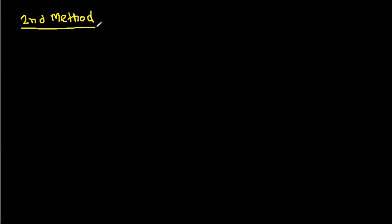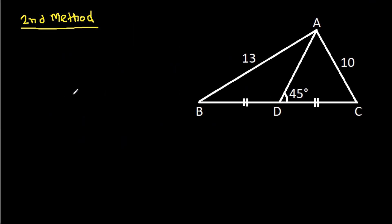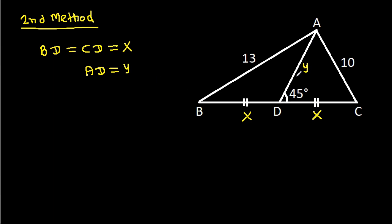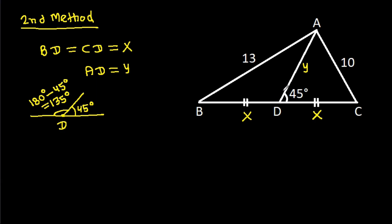And the second method: we have BD equal to CD. Suppose X, so BD is X and CD is X. And suppose AD is Y. Now at point D, this angle is 45 degrees. So the supplementary angle will be 180 minus 45, that will be 135 degrees.